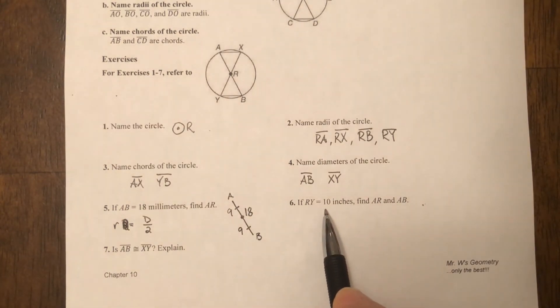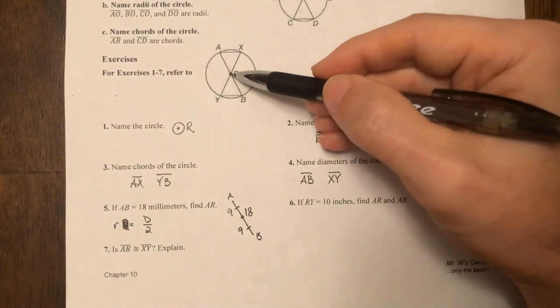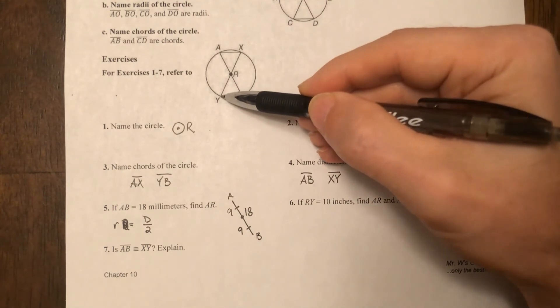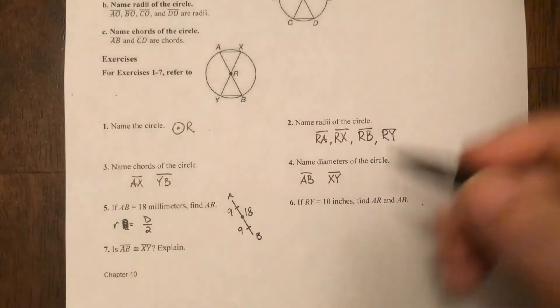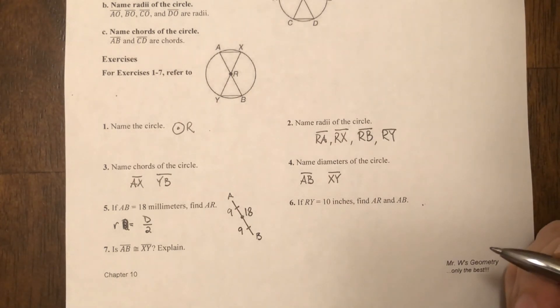Over here it says if RY is 10 inches, find AR and AB. When we look here at RY, if we're starting from the center of the circle to the circle, just that one distance there, that's a radius.